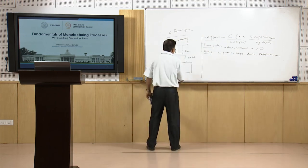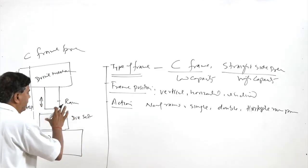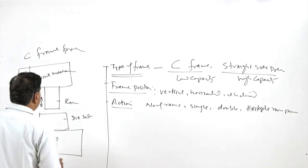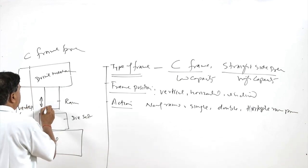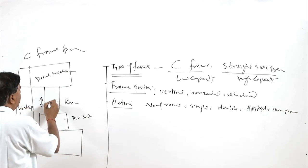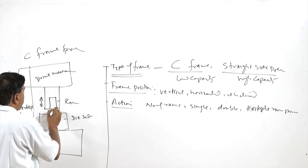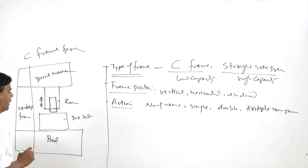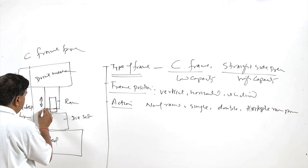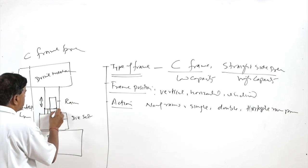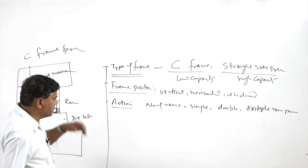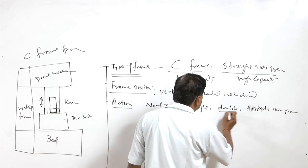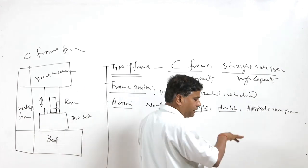In a single ram press there is just one ram moving up and down. In a double ram press there are two rams — one outer and one inner. The inner ram moves inside the guideways of the outer ram; first the outer ram moves and holds the sheet metal, then the inner ram comes into action.